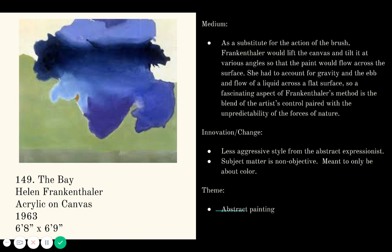Her technique is also part of the medium. As a substitute for action painting — like Jackson Pollock dripping paint — she would lift her canvas, which is six feet by six feet, walking around it and lifting one corner at a time, tilting it at various angles so the paint would flow around the surface. She had to account for gravity and the flow of liquid across the surface. Her method is a blend of controlled intention and some unpredictability with the end result — a nice marriage she puts together.